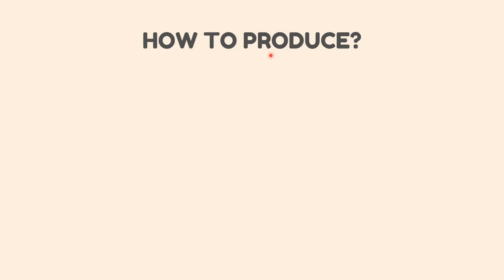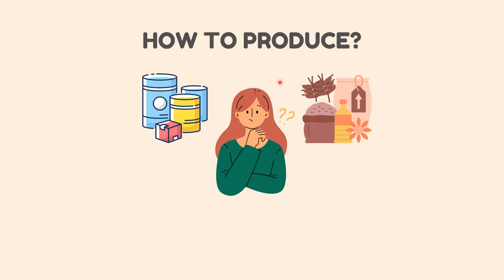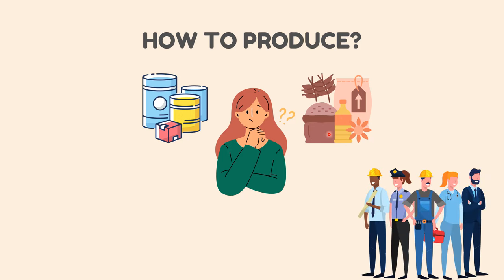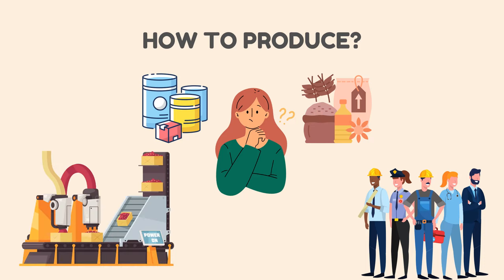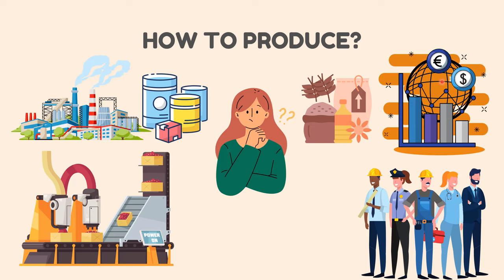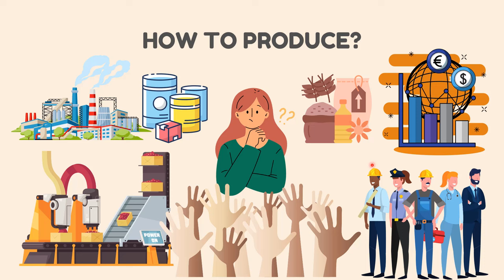Our second question is: how to produce? This refers to different aspects of production — selecting which raw materials to be used, what technique of production has to be adopted, and where these goods would be produced. How to produce largely deals with deciding what amount of labor would be involved. There is a capital-intensive technique where more machinery is used, and a labor-intensive technique where more manpower is used. Goods can be produced in-house or in a foreign land — in-house production means employment generation, whereas foreign production means goods produced at a lesser price. All these aspects need to be seen keeping in mind their effect on society.